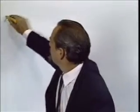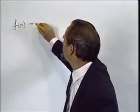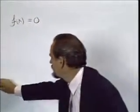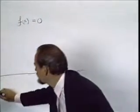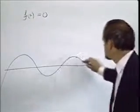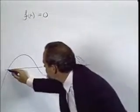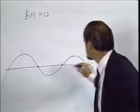Newton's method concerns solving equations, trying to find numbers x such that f of x is equal to zero. Graphically, this means the following: the function f has some graph, and the solutions of f of x equals zero are the places where the graph intersects the axis.